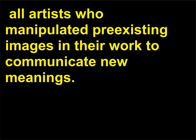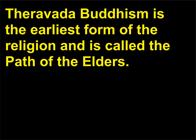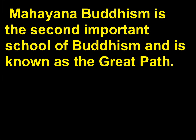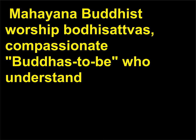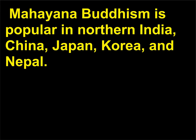What is the difference between Theravada Buddhism and Mahayana Buddhism? Theravada Buddhism is the earliest form of the religion and is called the Path of the Elders. It is most popular in India, Sri Lanka, and parts of mainland Southeast Asia. Mahayana Buddhism is the second important school of Buddhism and is known as the Great Path. Mahayana Buddhists worship bodhisattvas — compassionate Buddhists-to-be who understand the path to enlightenment and devote themselves to teaching others how to achieve Nirvana. Mahayana Buddhism is popular in Northern India, China, Japan, Korea, and Nepal.